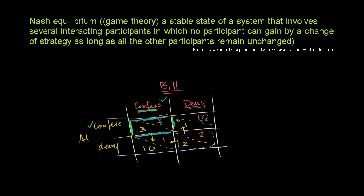The idea of a Nash equilibrium is important enough that it deserves its own video. It's named for John Nash, who was played by Russell Crowe in the movie A Beautiful Mind. It's a game theoretical concept. Game theory sounds very fancy, but it really is just the theory of games. This prisoner's dilemma we talked about in the previous video really is a game — the different players have different strategies, and based on their interacting strategies, you end up with different outcomes.